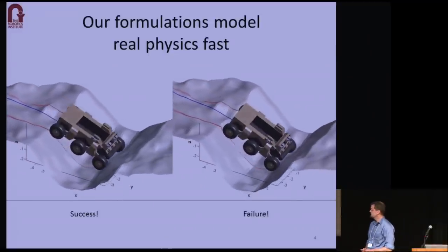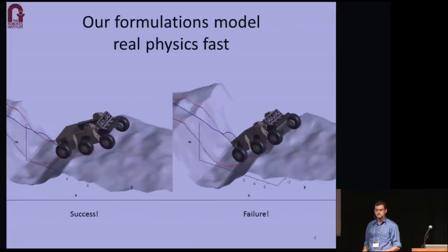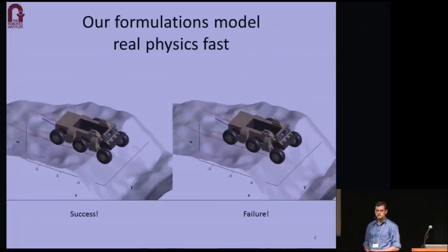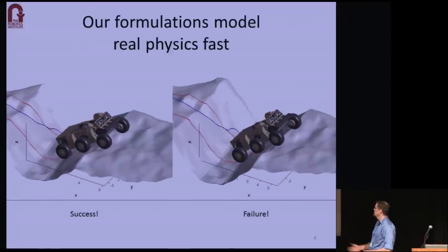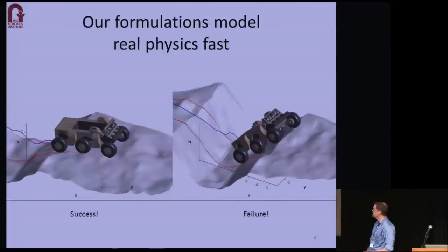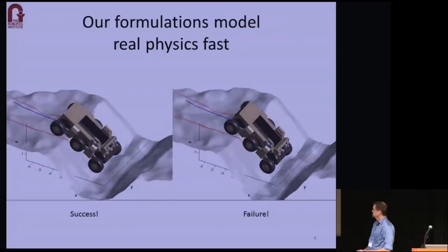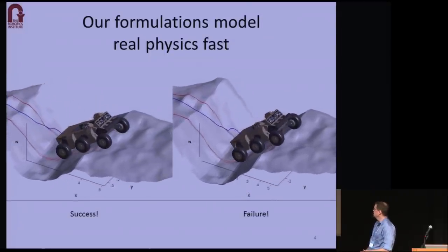So we've implemented software libraries based on our modeling research. And with just a few lines of code, we can construct a dynamic model for any configuration, including complex ones like Crusher, and simulate it over a thousand times faster than real-time on an ordinary PC. The ditch on the right is just a half meter deeper than the one on the left, but that makes it just a little bit too steep for Crusher to drive out of due to the traction limits.